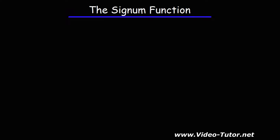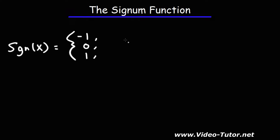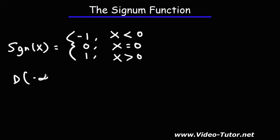Let's talk about the signum function. The signum function is another way of describing the sign function, and you can describe it using a piecewise function. It can have three values: negative one, zero, and one. When x is less than zero, the signum function equals negative one; when x equals zero, it equals zero; and when x is greater than zero, it equals one. The signum function has a domain of all real numbers, but the range only has the specific values negative one, zero, and one.